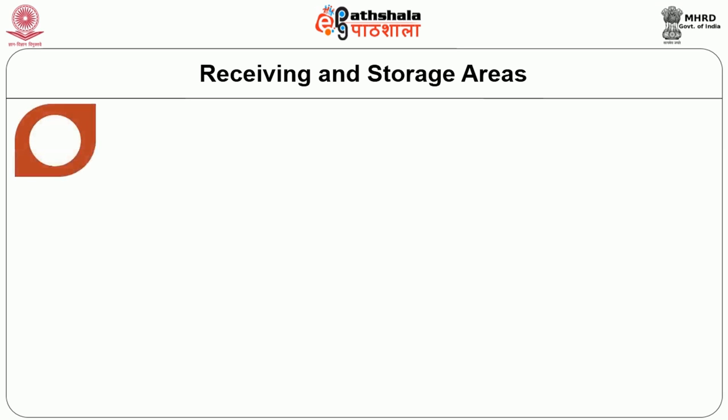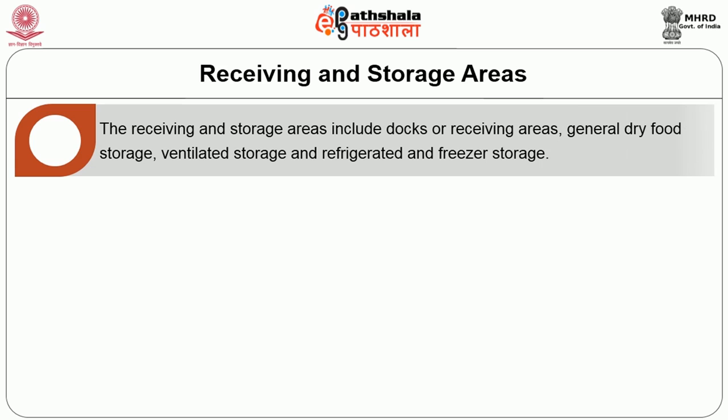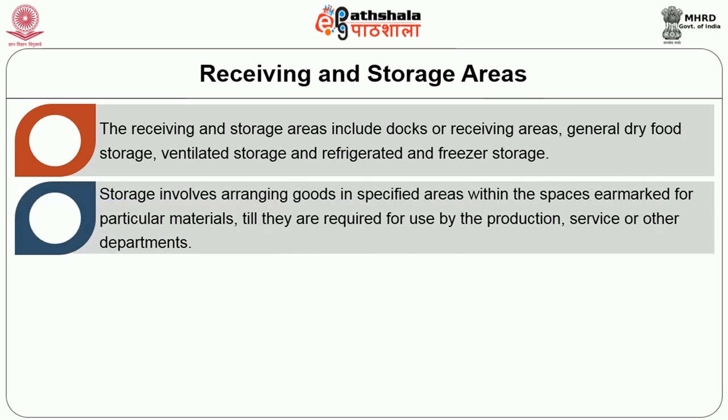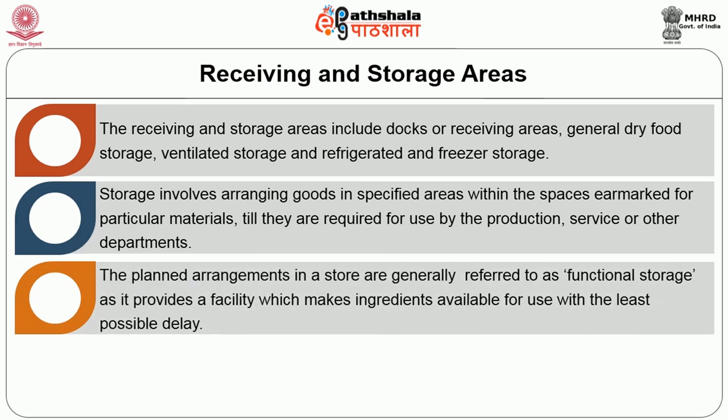Now we move on to the receiving and storage areas. The receiving and storage areas include docks or receiving areas, general dry food storage, ventilated storage, and refrigerated and freezer storage. Storage involves arranging goods in specified areas within spaces earmarked for particular materials till they are required for use by the production, service or other departments. The planned arrangements in a store are generally referred to as functional storage, as it provides a facility which makes ingredients available for use with the least possible delay.